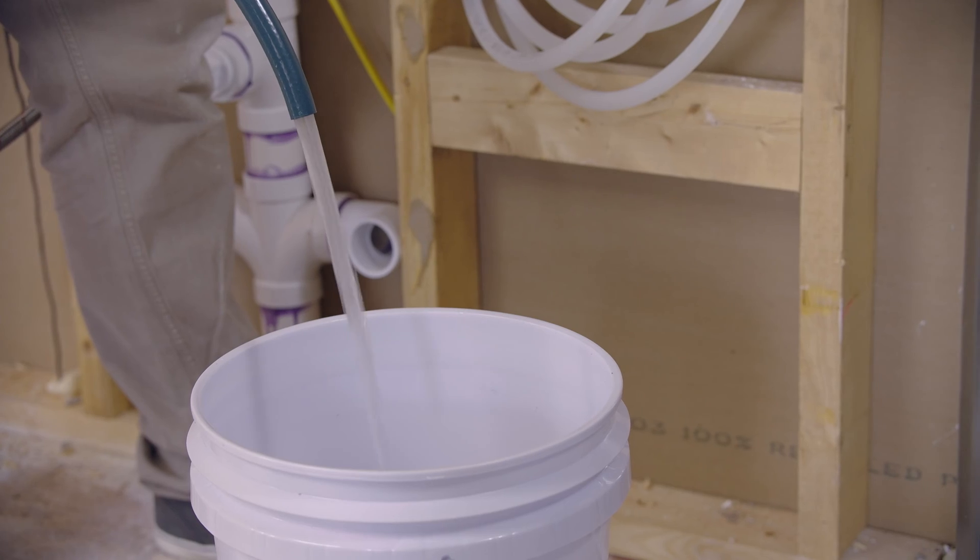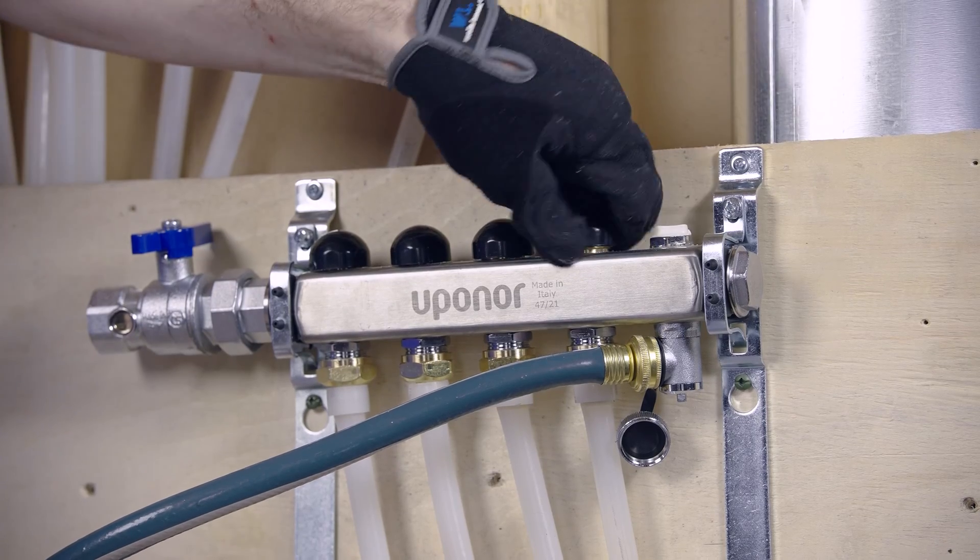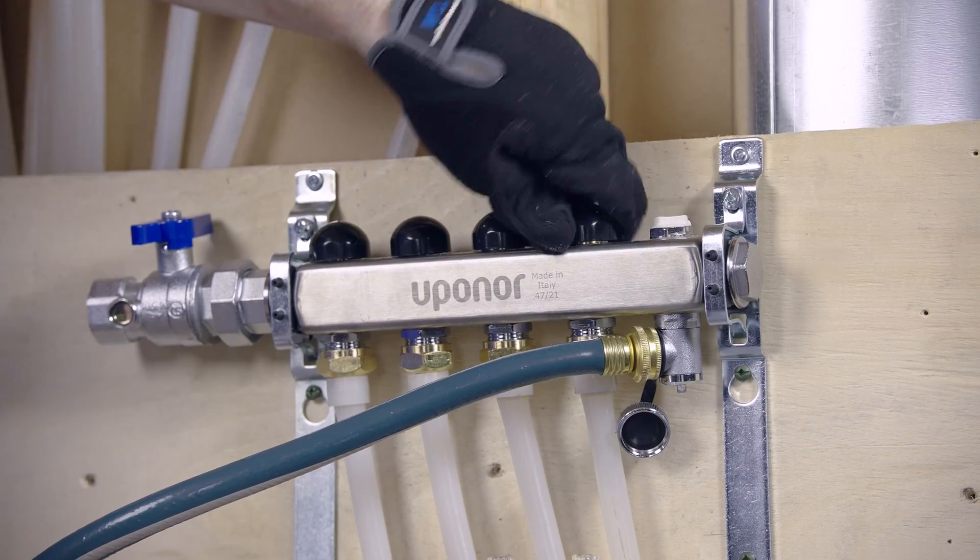Once the air has been eliminated, close that loop and open the next loop on the manifold. Continue the process until all the loops have been filled.